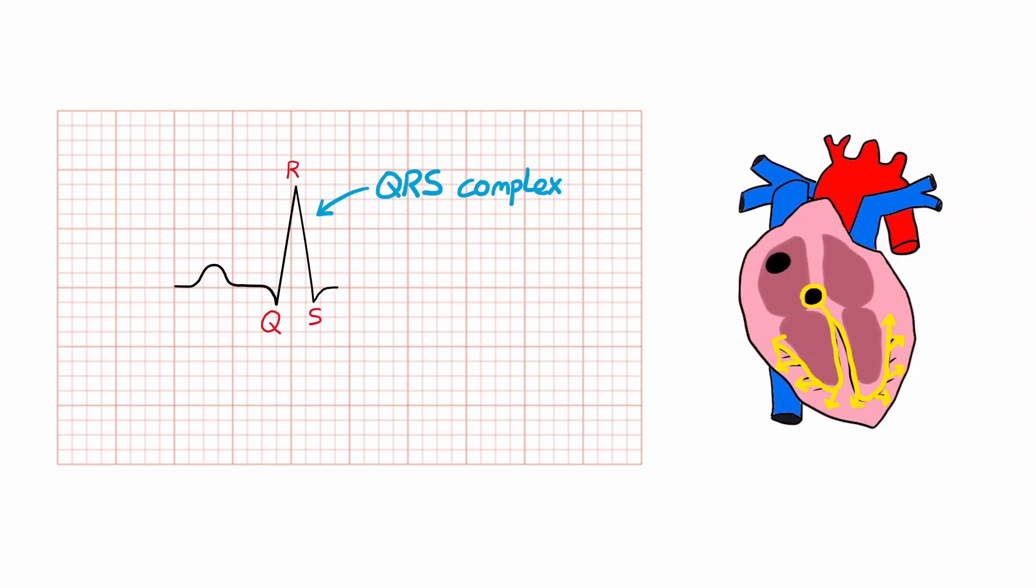Following this is the QRS complex which represents ventricular depolarization. It has both negative and positive deflections because the wave of depolarization spreads across the ventricles traveling in multiple directions, both towards and away from positive electrode.